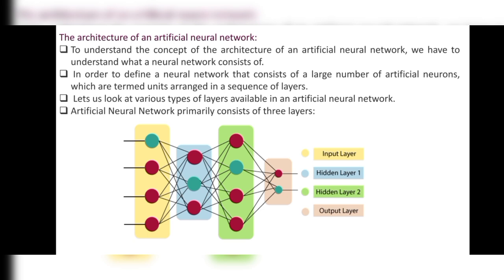The three layers are: input layer, hidden layer, and output layer. Hidden layers can be any number, but the primary structure has three layers. In the diagram, the yellow box represents the input layer, the blue and green boxes are hidden layers one and two, and the last box is the output layer. This is the architecture of an artificial neural network.